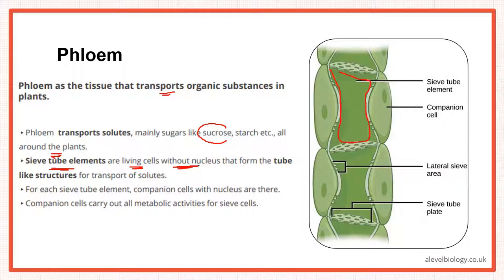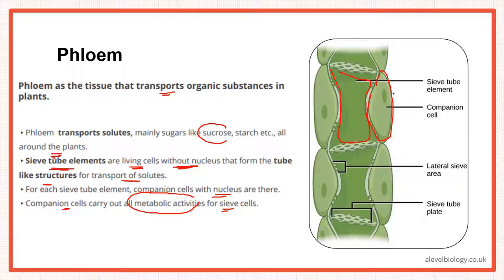For each sieve tube element, there are companion cells next to them. The companion cell has a nucleus and all the cellular organelles found in a typical plant cell. Companion cells carry out all the metabolic activities for the sieve cell. Because they have all the components, these can then be transferred to the sieve tube elements via plasmodesmata.